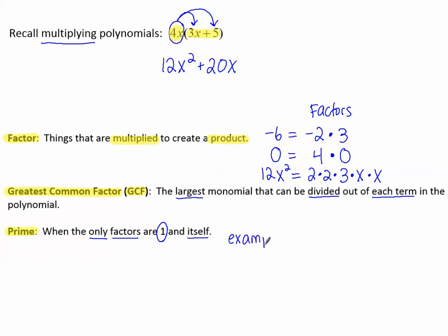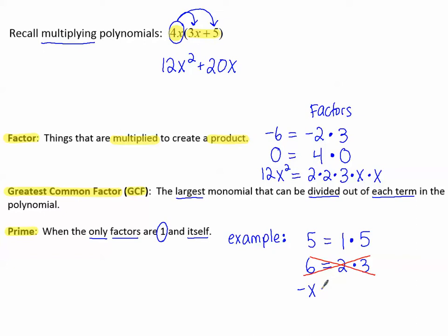For example, 5 is a prime number because it can only be factored into 1 times 5. Unlike 6, which can be factored into 2 times 3 — so 6 is not prime. Negative x is prime because I can write it as 1 times negative x.